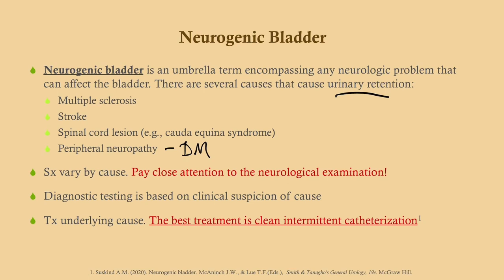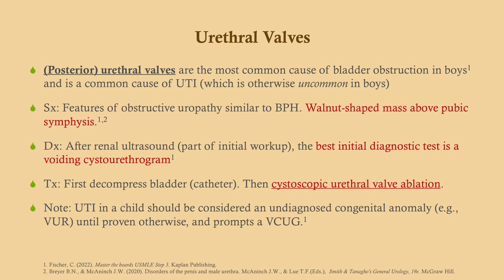Symptoms of neurogenic bladder vary by cause — MS, cauda equina syndrome, and peripheral neuropathy all present differently. Diagnosis is based on clinical suspicion of the underlying cause. Treatment addresses the underlying cause, but you should also decompress the bladder with intermittent catheterization. Many of these patients require long-term catheterization, so remember they are at increased risk for UTI due to bladder instrumentation.